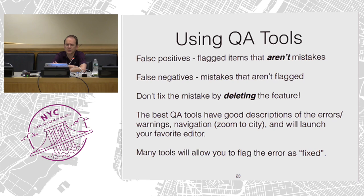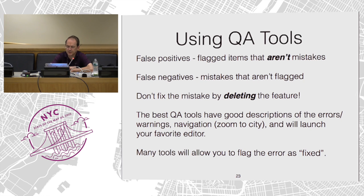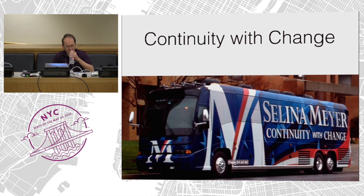So, using QA tools: false positives are flagged items that really aren't mistakes — the tool may not have caught up with what the wiki or current practice is. False negatives are things the tool just isn't going to catch, either outside of what it can do or something like a street name where it doesn't know what the name is. Do not make the mistake of deleting the feature to fix the problem — figure out what's going wrong and be gentle to the map. The best QA tools have good descriptions of errors and warnings, have navigation to launch your favorite editor, and allow you to mark the error as fixed. Continuity with change — be gentle when fixing things, try to figure out what the mapper intended when making corrections.